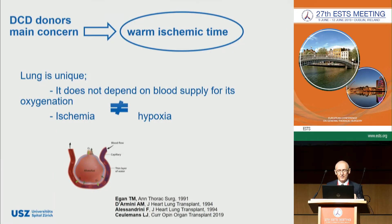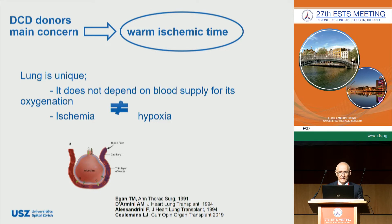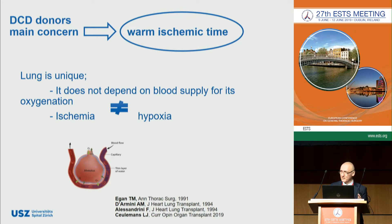The main concern regarding DCD is the warm ischemic time. However, it has become apparent that the lungs are more robust to ischemia than we thought before. Lung parenchyma is unique among all solid organs, as its oxygenation does not depend solely on blood supply. For the lungs, ischemia is not equal to hypoxia or anoxia. Briefly, the lungs are ischemically privileged by a local storage of oxygen in their alveoli.